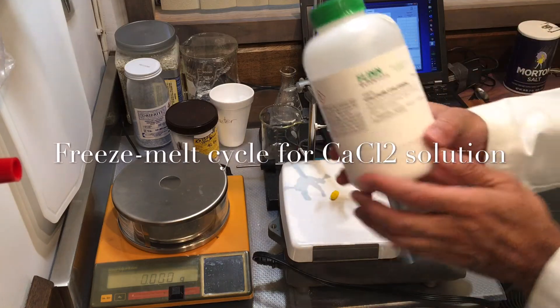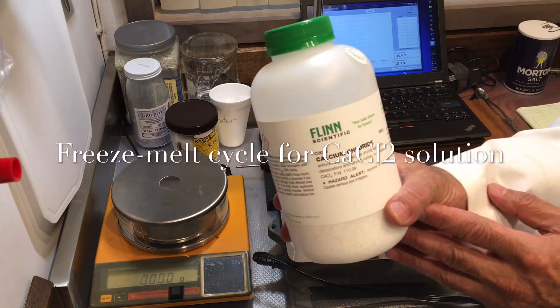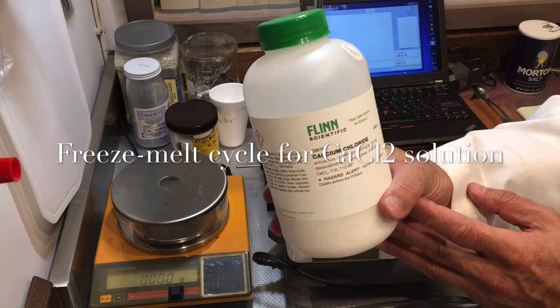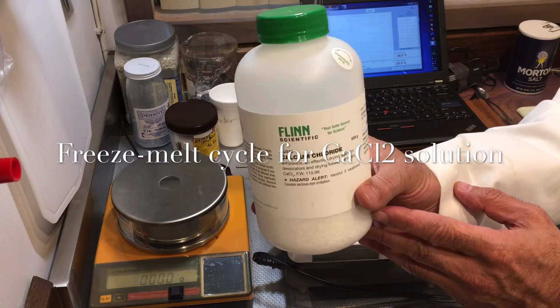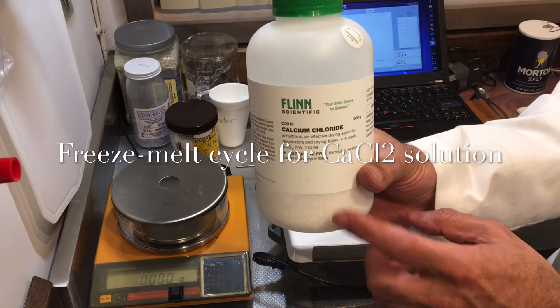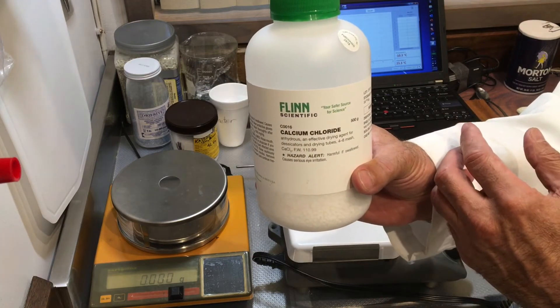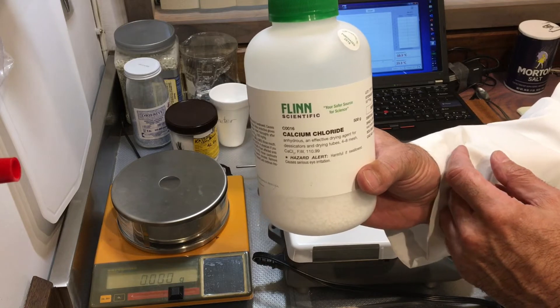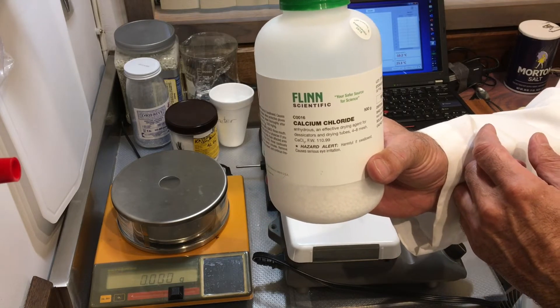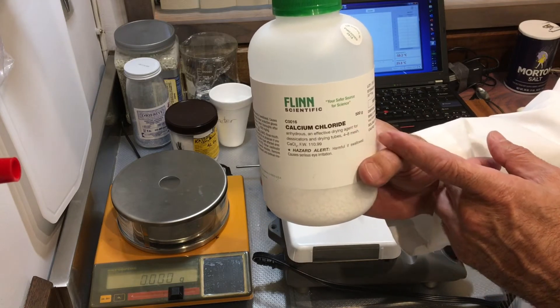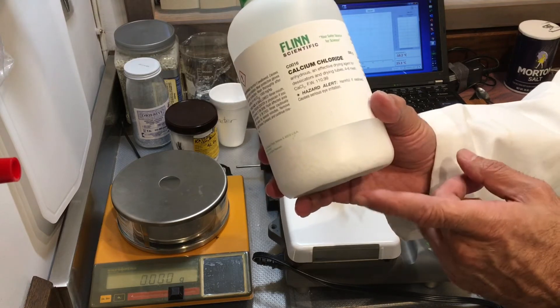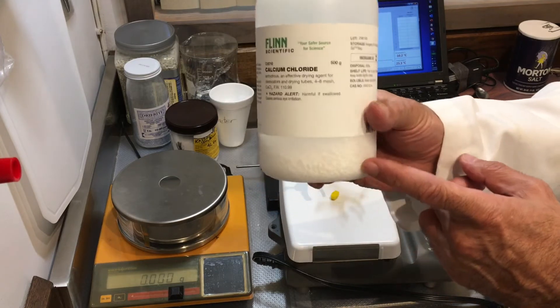Our next salt is calcium chloride. This salt is anhydrous, which means it doesn't contain any moisture water as water of hydration. It's pure salt of CaCl2. It's also used as a desiccant, which is a drying agent. It's like coarse crystals like that.